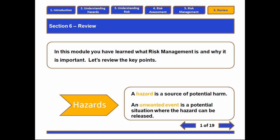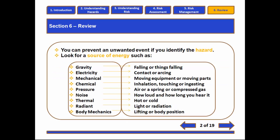First, remember the important technical definitions involved. Hazard — what is a hazard? A hazard is a source of potential harm. An unwanted event is a potential situation where that hazard can be released. Hazards are usually related to a source of energy, and it's the release of that source of energy in an undesirable manner that can cause harm.